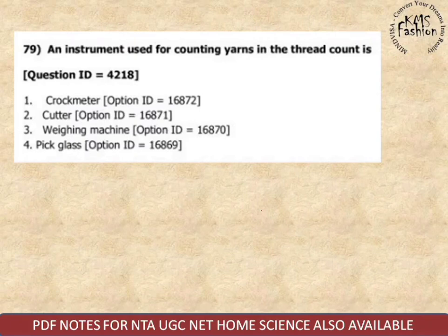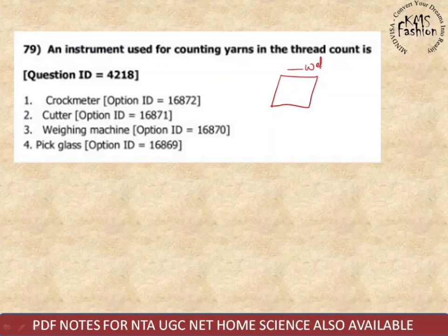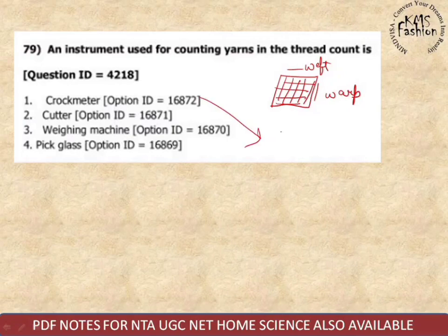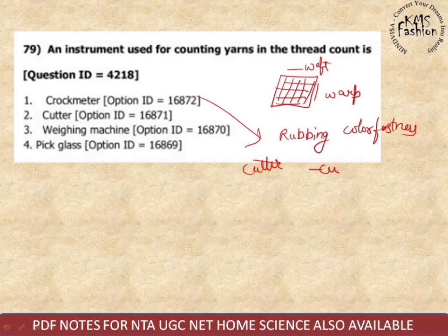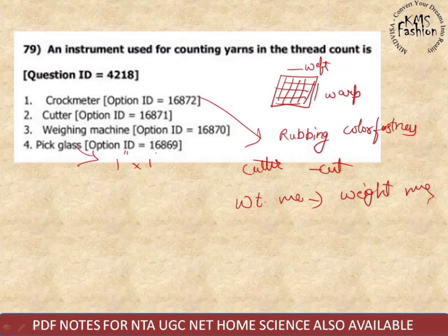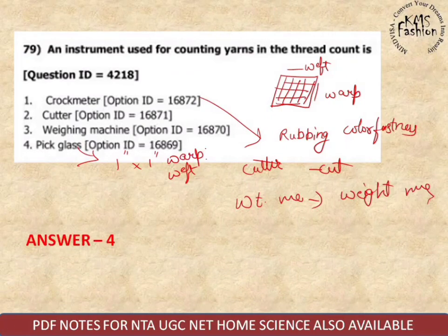Next question: what instrument is used for counting yarn? They are asking about counting warp and weft threads. Crockmeter is used for rubbing/color fastness testing. Cutter is for cutting. Weight machine is for measuring weight. So what's left? A pick glass — within one inch by one inch, you can judge both warp and weft and count how many yarns are there. So the correct option is pick glass.